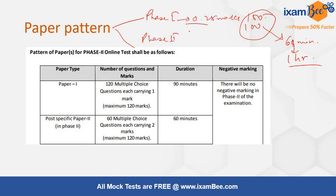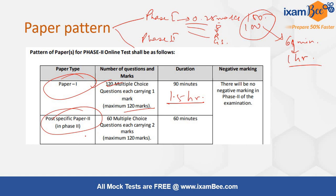For phase 2, there will be 2 papers, paper 1st and paper 2nd. Paper 1st will have 120 multiple choice questions of 120 marks and the time duration will be 1.5 hours. While for paper 2, which is specific to the post, there will be 60 questions carrying 2 marks each, that is 120 marks. There will be no negative marking in phase 2 — that's good news for us.